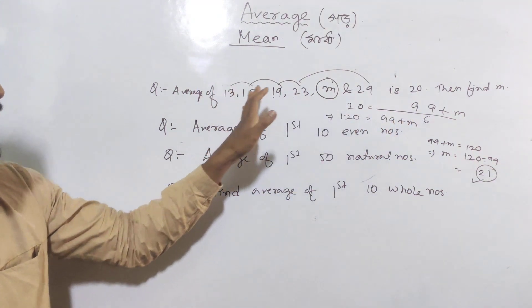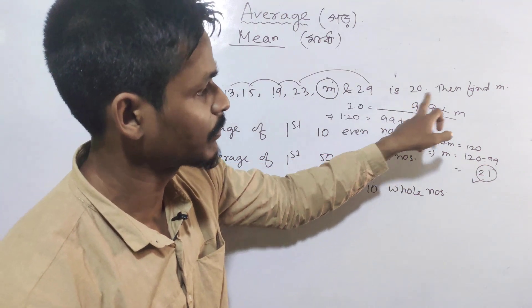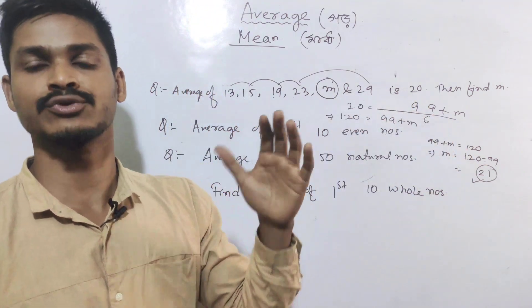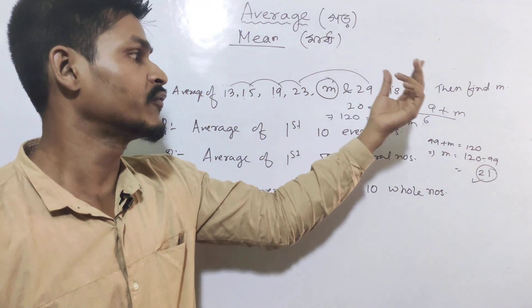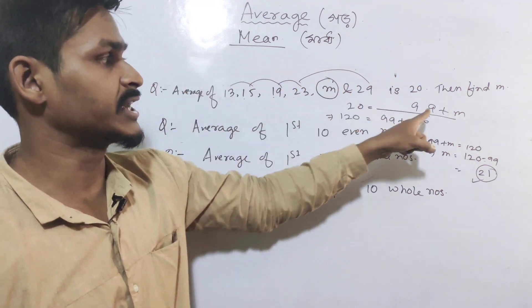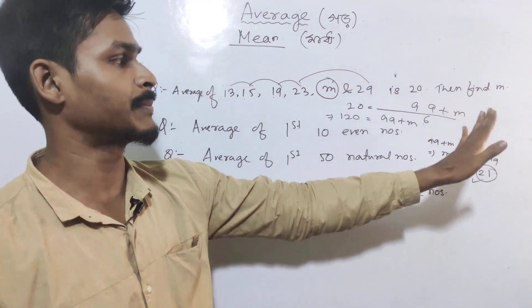To summarize: average definition — sum of the terms divided by total number of terms. And here 99 plus M equals 120, giving M equals 21.